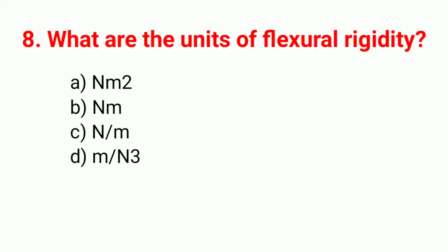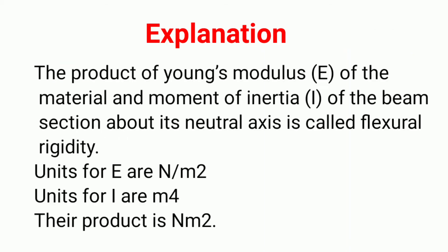Question 8: What are the units of flexural rigidity? The answer is option A, Newton meter square. Explanation: the product of Young's modulus E and moment of inertia I of the beam section about its neutral axis is called flexural rigidity. The units of E are Newton per meter square, units of I are meter raised to 4, and their product gives Newton meter square.